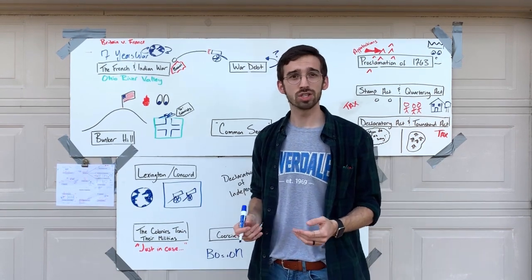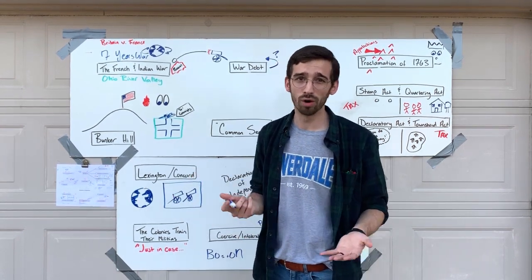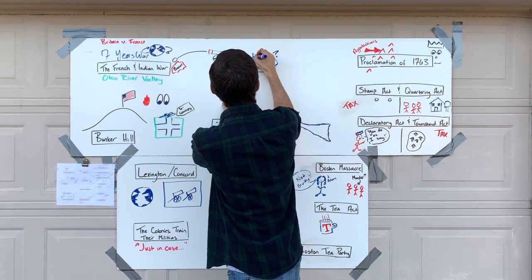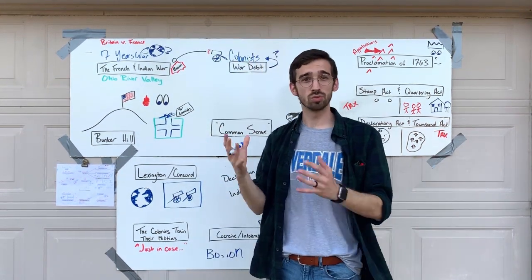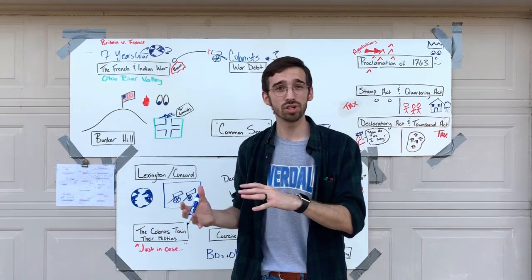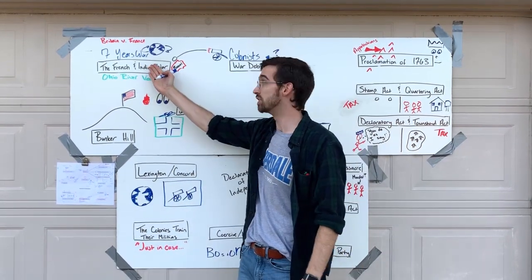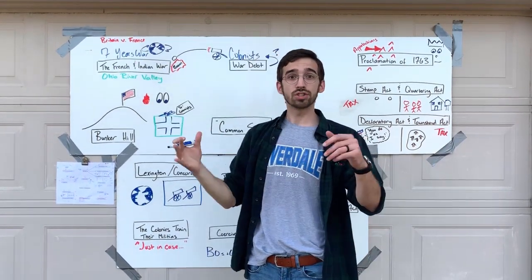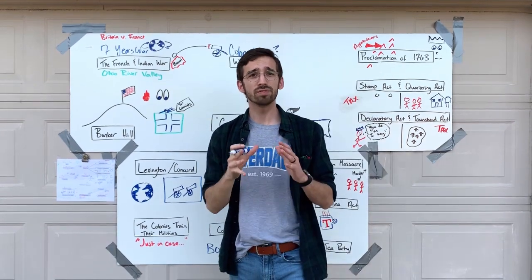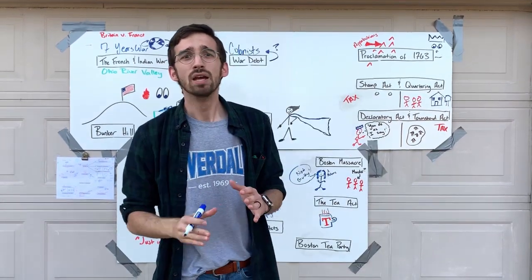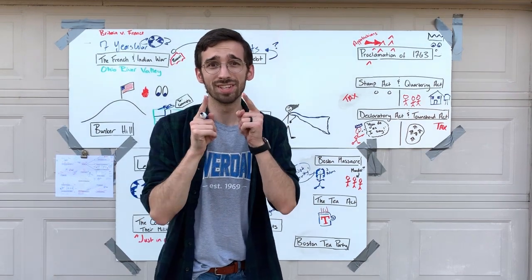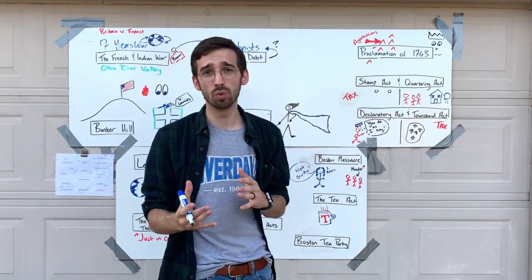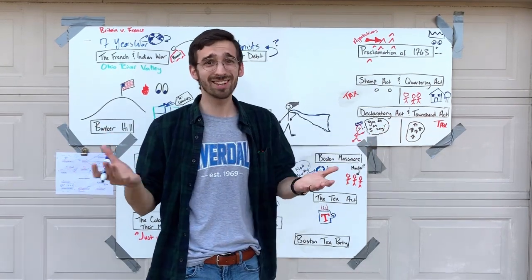You also have to ask whose fault it is that we had a war. The answer is the colonists, because it was the colonists who attacked the French in the Ohio River Valley, starting the French and Indian War, which then started the Seven Years' War — this global conflict of Britain versus France. So the colonists are responsible, and we're going to pass several taxes because it makes sense that the ones who caused it should be the ones who pay for it.